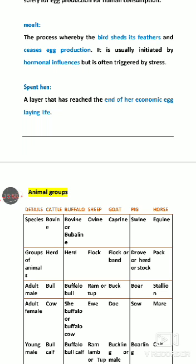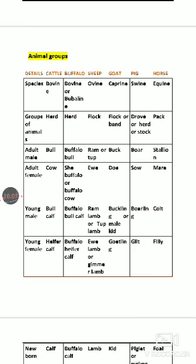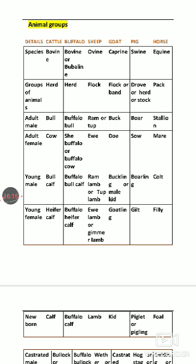These were important terminologies explained in this lecture. The table provided should be read and memorized carefully as it is very important from exam and viva points of view — multiple questions can be asked from it. For example, animals like bovine (cattle), ovine (sheep), caprine (goat), swine (pig), horse — their group names should be known: group of cattle is herd, group of buffalo is herd, group of pig is herd or drove.